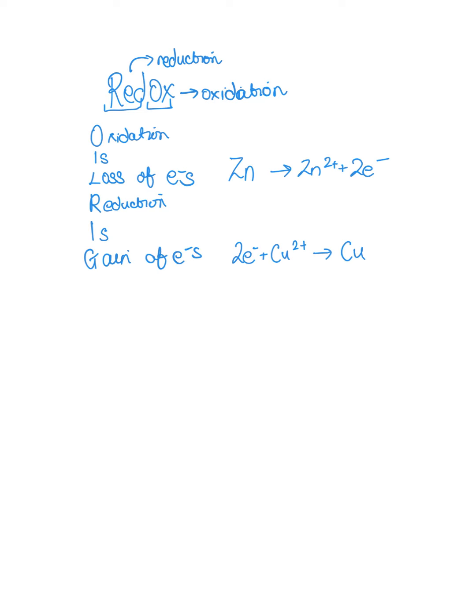And reduction is the gain of electrons. So as you can see in these reactions that I've drawn in here, this reaction is an oxidation reaction, because you have lost electrons as the reaction has gone on. And the second one here with copper is a reduction reaction, because we have gained electrons.